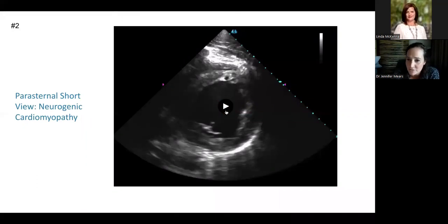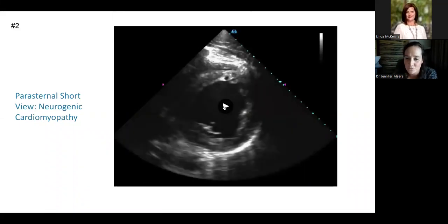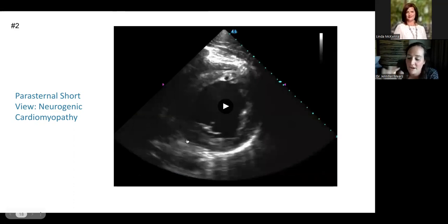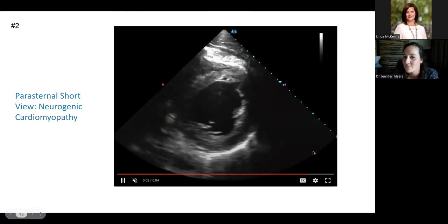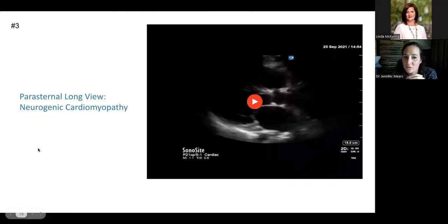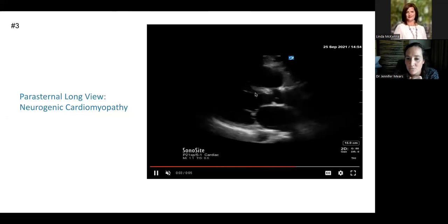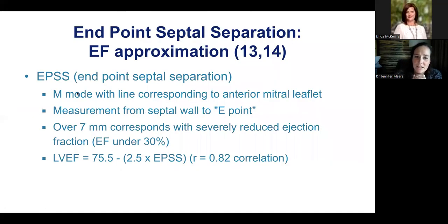Looking further into this pathology using other views — the apical four is most commonly used, but you can also see it on the parasternal short view. Contrasted with the normal view where all walls thickened towards the center, here there's pretty much no actual movement of this wall — it's just quivering. Below the papillary muscles, when you see this lack of contraction, it's probably neurogenic in nature. On the parasternal long view, there's very minimal movement of blood flow up through the aortic outflow tract because of the lack of contractility of the left ventricle. This raises the question of ejection fraction.